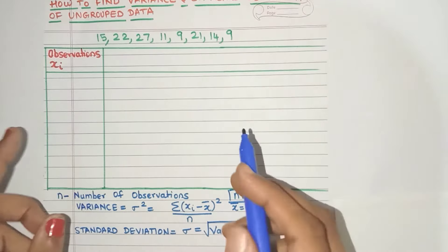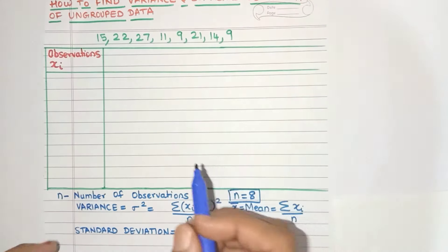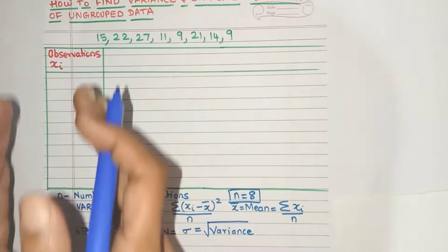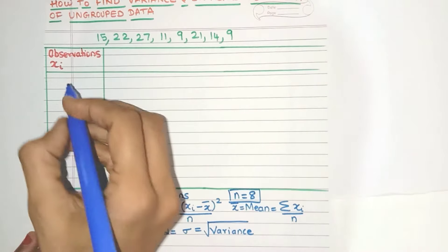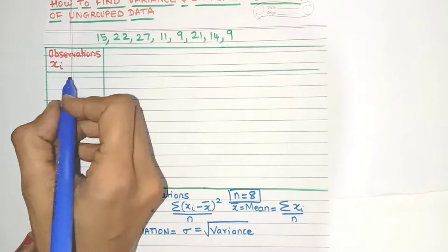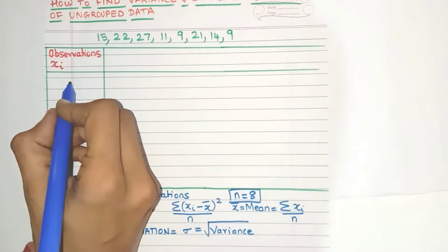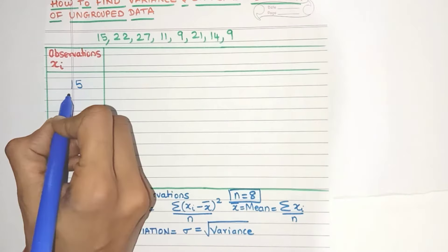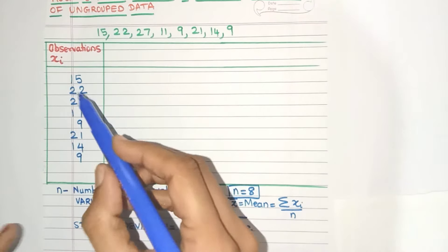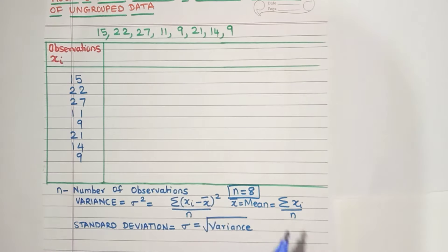Now next, what is xi? xi are these observations here. So let's write these observations in a tabular form in the form of column. Whenever we do calculations in tabular form, it's easier to understand and we also make less mistakes. So let's write the observations here. Now just make sure that you write the digits one below the other. I'll soon tell you why.